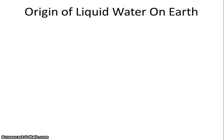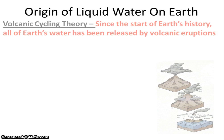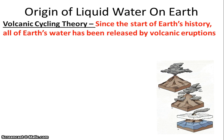So, how did liquid water get on Earth? There are actually two theories about this. For a very, very long time, marine scientists believed that the liquid water on Earth — that's in our oceans — actually originated from volcanoes.